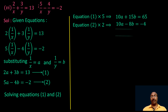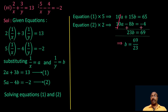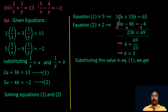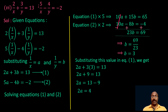Solving by elimination: LCM of coefficients of a (2 and 5) is 10. Multiply equation 1 by 5 giving 10a plus 15b equal to 65, and equation 2 by 2 giving 10a minus 8b equal to minus 4. Subtracting, 10a cancels. Then 15b plus 8b equal to 23b and 65 plus 4 equal to 69, so b equal to 69 by 23 equal to 3. Substituting b equal to 3 in equation 1: 2a plus 9 equal to 13, so 2a equal to 4, giving a equal to 2.